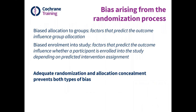Bias arising from the randomisation process. What are we trying to achieve by randomisation? If successfully accomplished, randomisation avoids either known or unknown prognostic factors — factors that predict the outcome, such as severity of illness or presence of comorbidities — influencing intervention group assignment. This means that on average the intervention groups have the same prognosis before the start of intervention, so they are balanced or interchangeable.